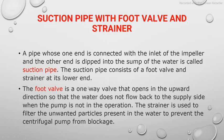The foot valve opens upward because the water extracted from the sump should not fall back again — that is why it opens upward and closes downward. The strainer is used to filter out unwanted particles present in the water to prevent the centrifugal pump from blockage, ensuring that unwanted particles do not enter and block the pump.